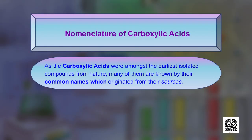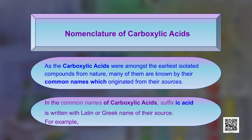We name carboxylic acids by two methods: common nomenclature, that is common names, and IUPAC names. As carboxylic acids were among the earliest isolated compounds from nature, many of them are known by their common names. The common names originated from their sources — that is, from which the carboxylic acid was isolated or found. In the common names, the suffix '-ic acid' is written with the Latin or Greek name of the source of the acid.